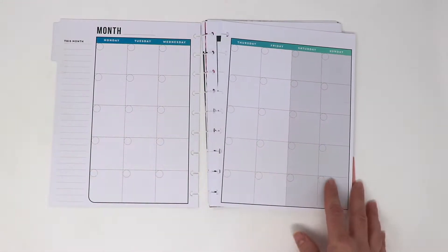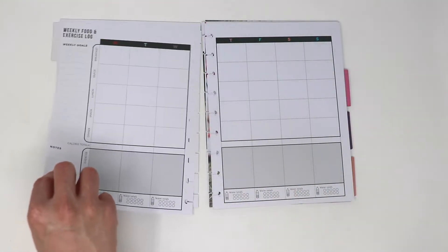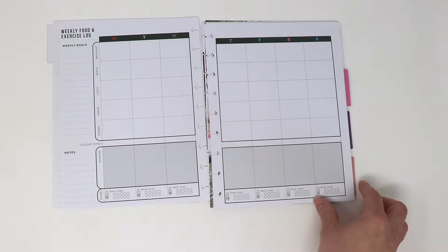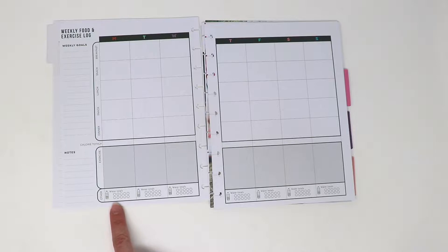As you can see, there's the monthly view and the weekly view. So here it shows that you have your weekly goals down here, it shows water totals so you can keep track of how much water you're drinking.